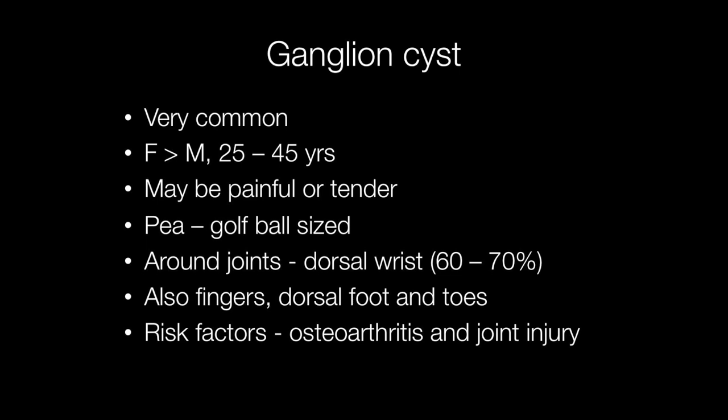Ganglion cysts are very common. They are more frequent in females than males and the usual age at which they occur is between 25 and 45. They may be painful or tender and arise around the joints, particularly the back of the wrist in 60 to 70 percent of cases.